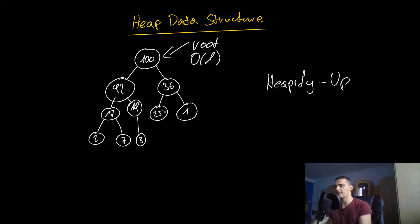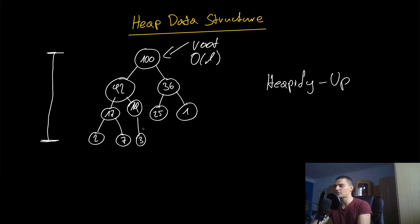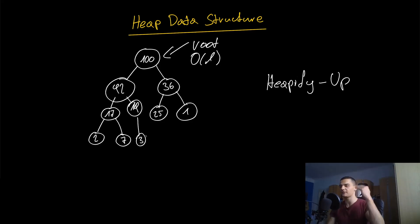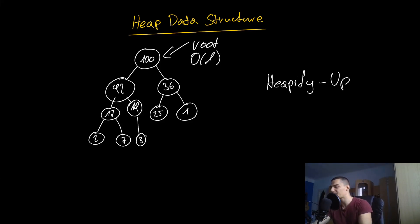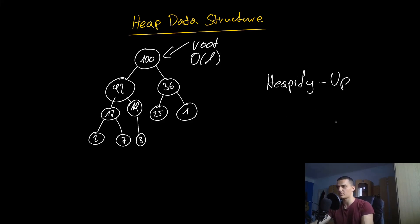We don't need to check 17 because 92 was already larger than 19, and 19 was the parent of 17, so 92 is automatically larger than 17. This insertion process is logarithmic in time because the number of levels in the tree is log base 2 of the number of elements. In the worst case we compare through all levels up to the root, but since the number of levels is logarithmic and each comparison is constant, inserting and heapify-up are both O(log n) operations.